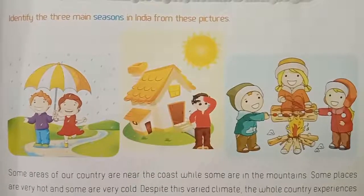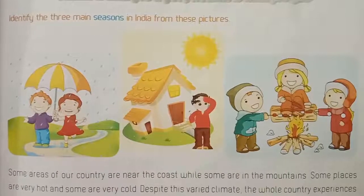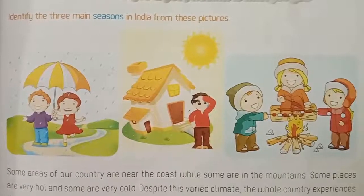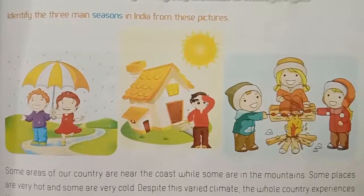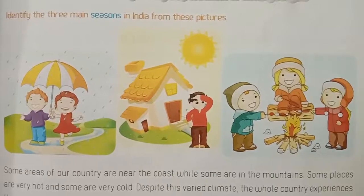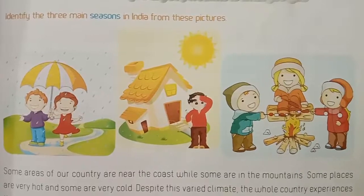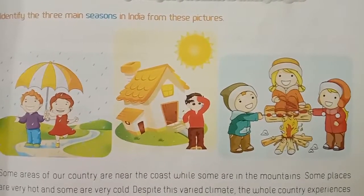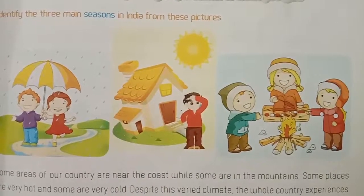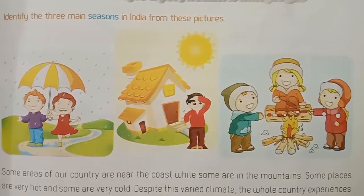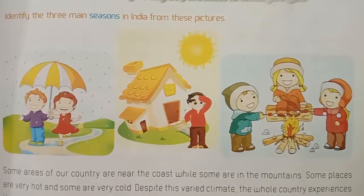How many seasons are there in India, children? There are mainly three seasons in India. What are they? Summer, winter, rainy. The summer season is from March to June, the rainy season is from July to October, and the winter season is from November to February.